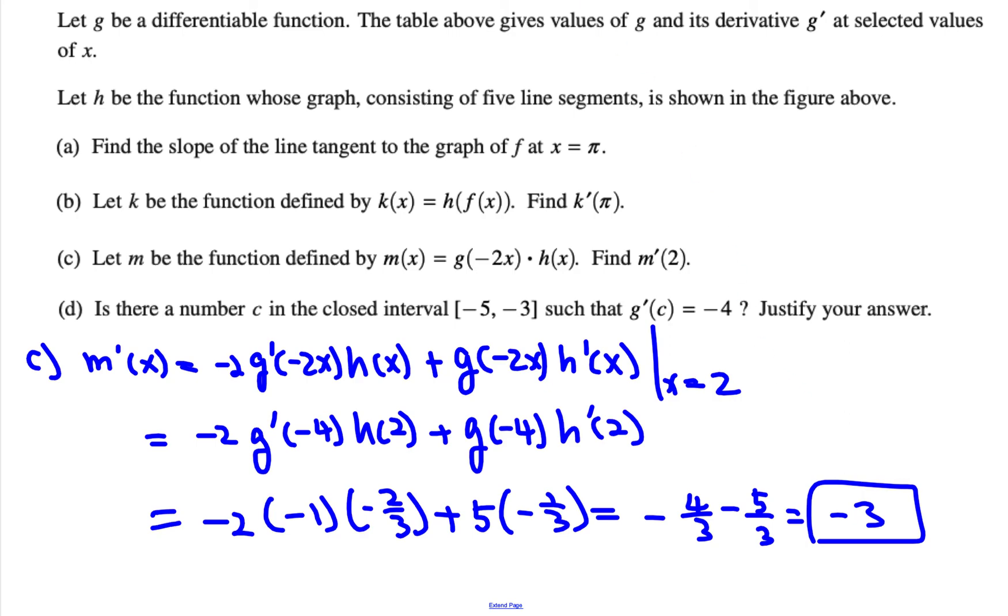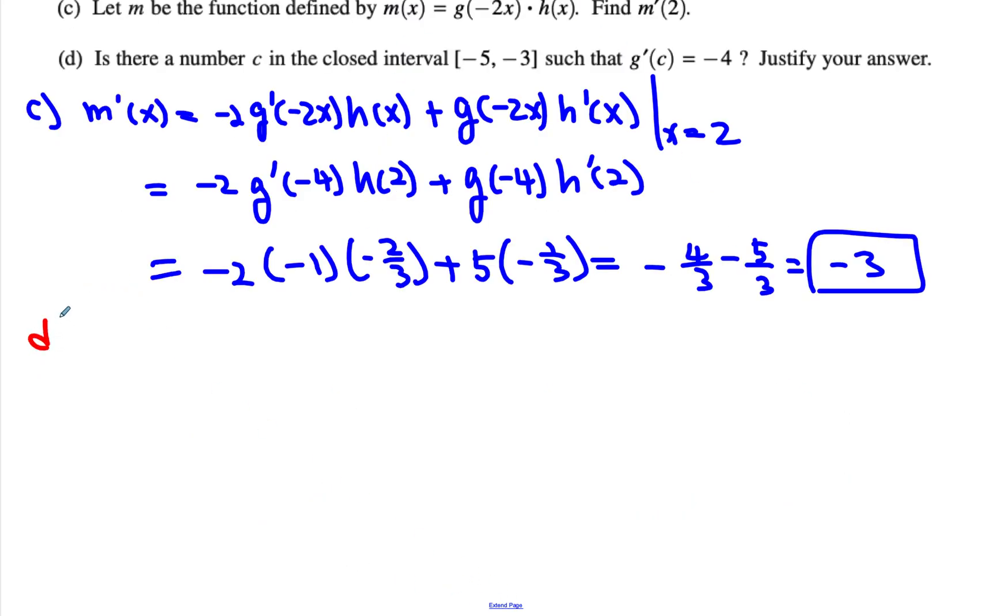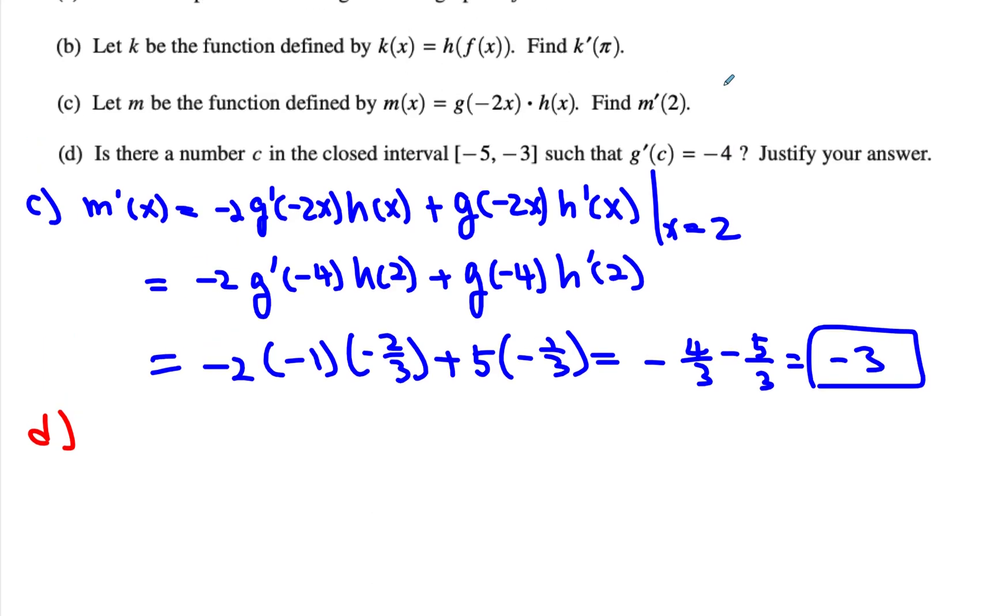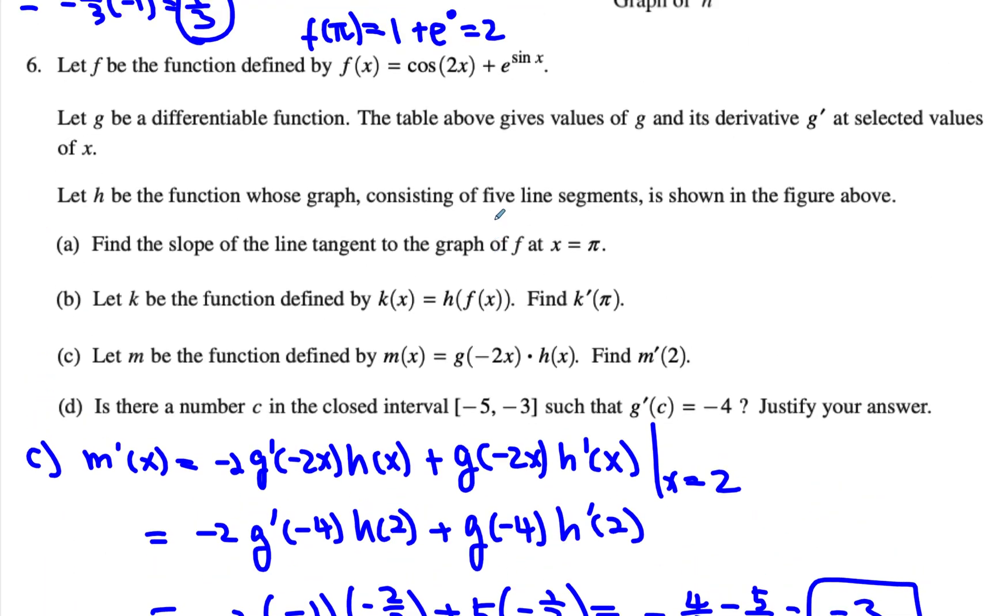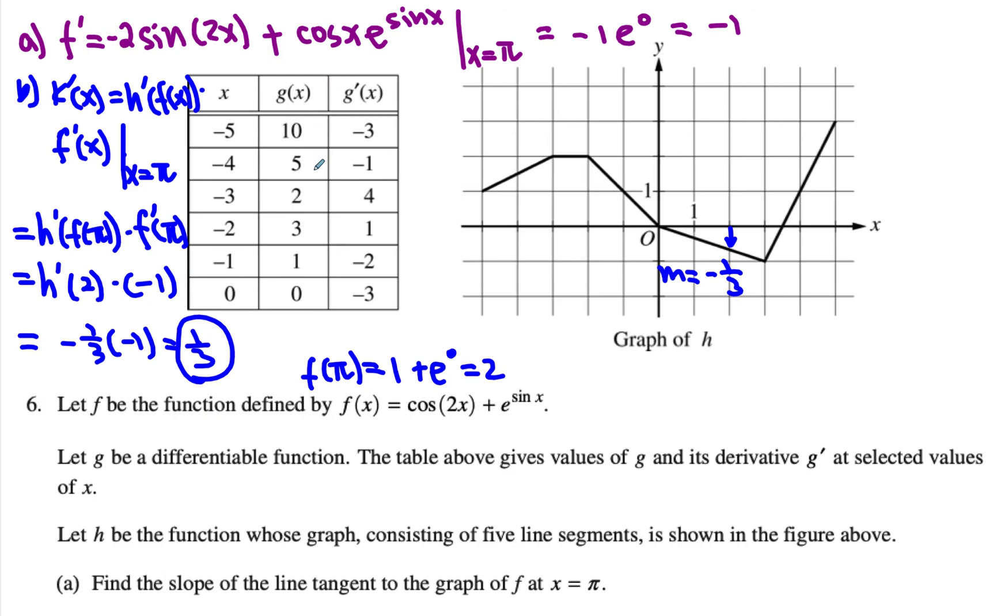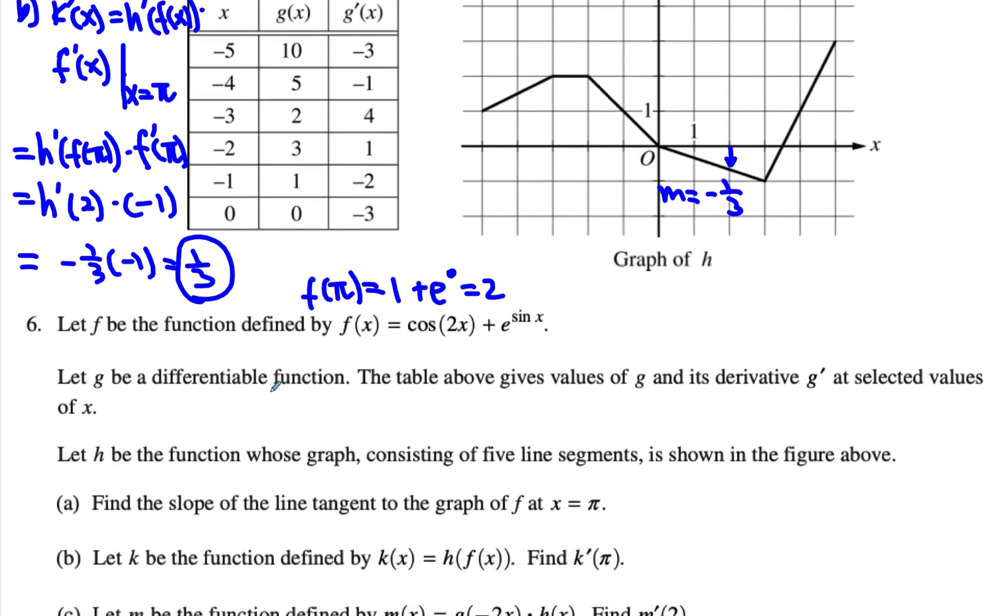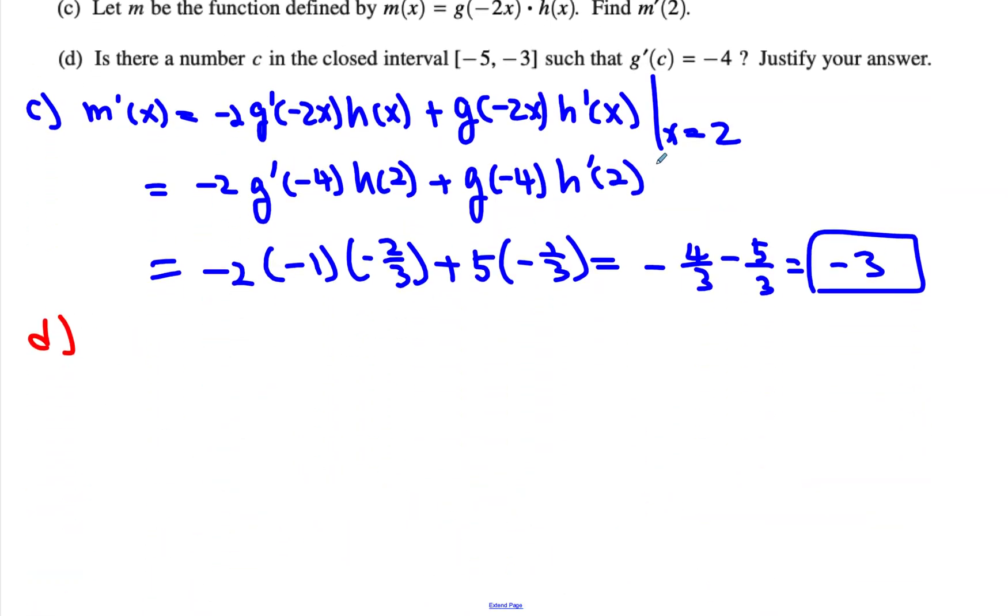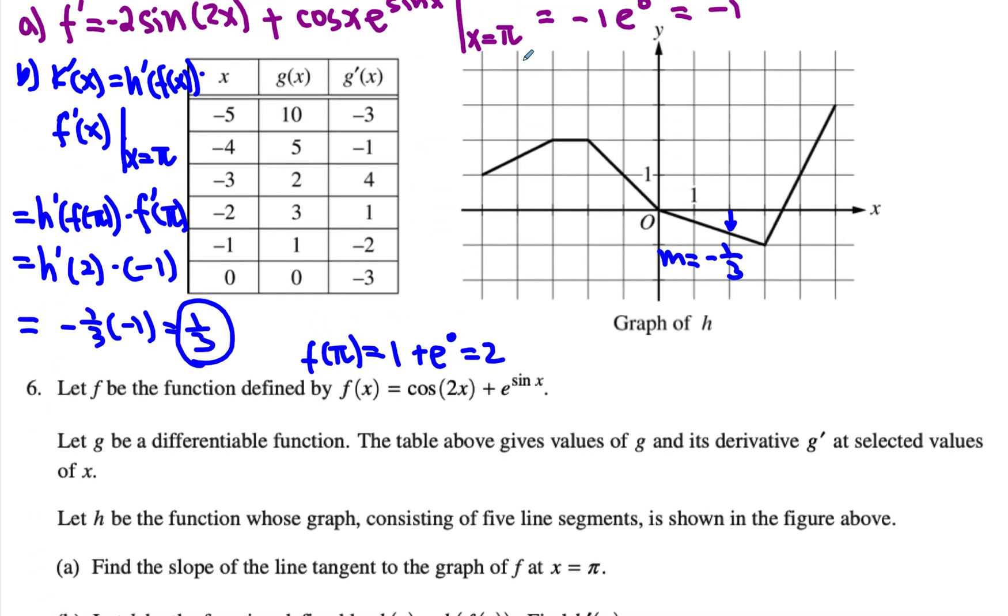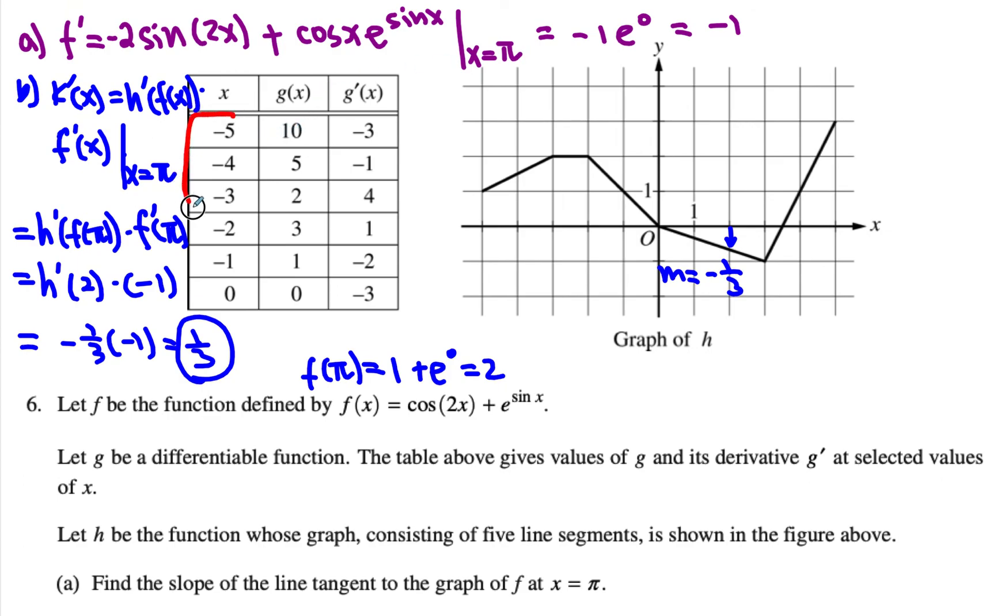Let's look at part d. Is there a number c in the closed interval where g prime of c is equal to negative four? Now, this one looks like a mean value theorem. But first, in order for mean value theorem to work, the function g has to be continuous and differentiable. So let's look at it then. Function g is said to be a differentiable function, which implies continuity. So then that portion is good. Negative five to negative three, so then I'm looking at right over here. Let's try to find the slope at the endpoints.